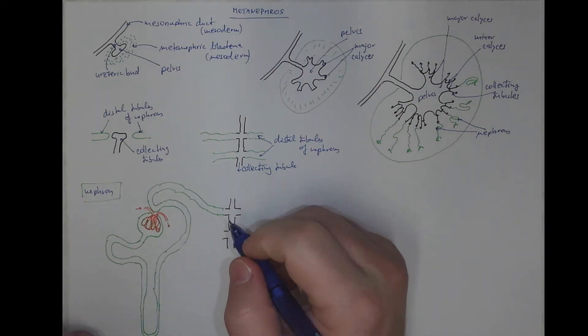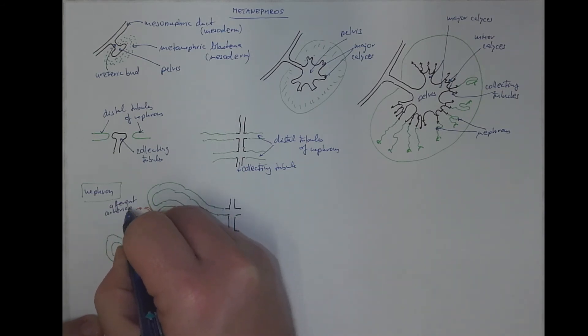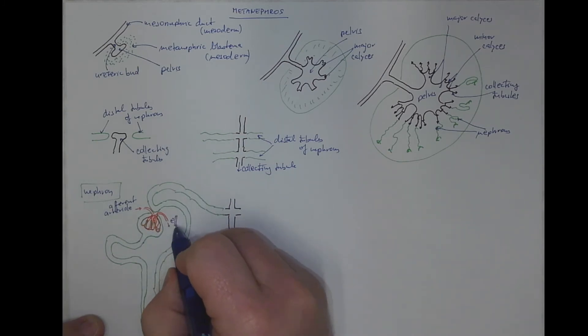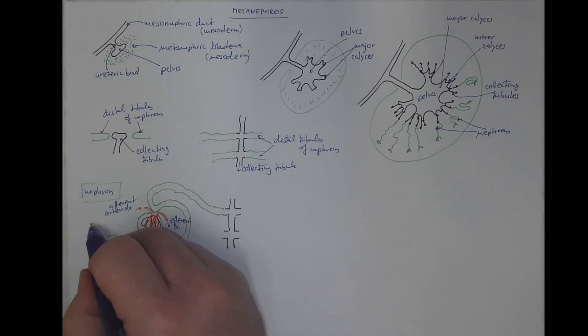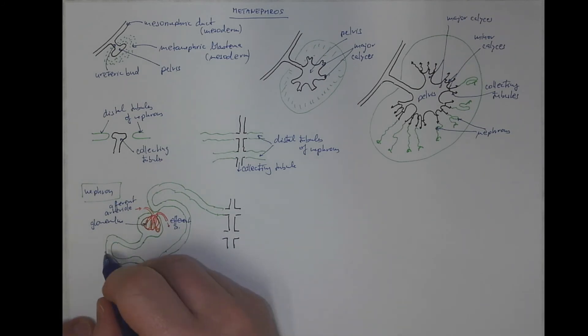So let's label the structures: the afferent arteriole, the efferent arteriole of the glomerulus, then the Bowman's capsule...